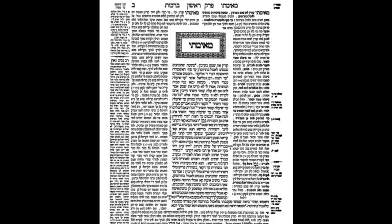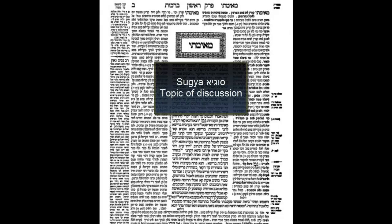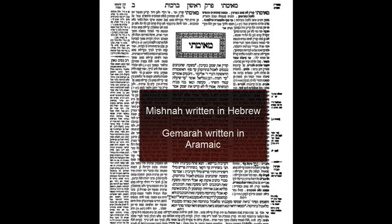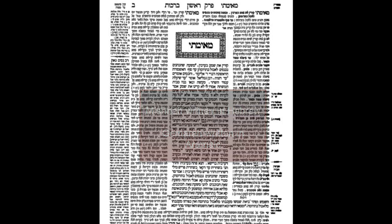We're back to our page of the Talmud. A sugya — a topic of discussion — always begins with a Mishnah. The Mishnah was compiled by Rav Yehuda HaNasi in the second century and is written in Hebrew. That's always how you can differentiate between a Mishnah and Gemara — the Gemara is written in Aramaic and the Mishnah in Hebrew. Here the Mishnah begins with a very nice graphic because it's the beginning of the Masechet itself; the beginning of a Perek is also easy to find.